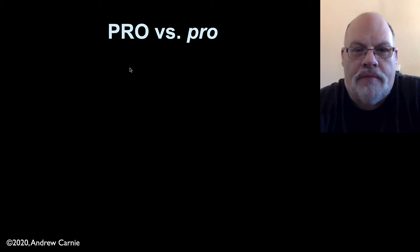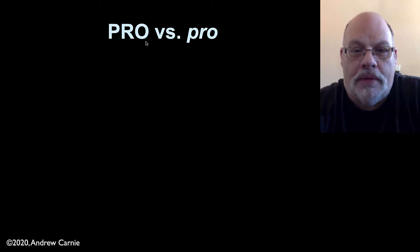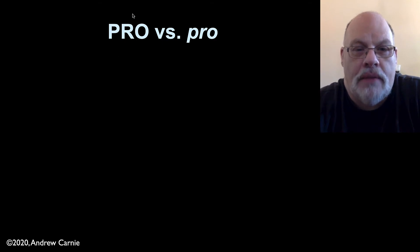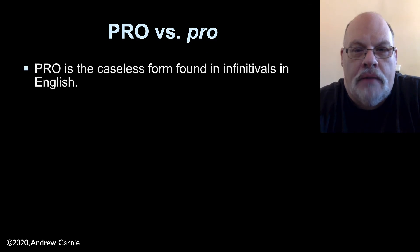But there are other empty categories, and it's worth talking about them very quickly. First of all, as I've mentioned before, syntacticians are really terrible at names. We have two Pros: Pro written in all capital letters, and Pro written in lowercase letters. Pro with capital letters is often called Big Pro, and Pro in lowercase letters is often called Little Pro or Baby Pro. These two empty categories are quite different from one another, so we've been talking mainly about Big Pro. But let's also introduce the idea behind Little Pro.